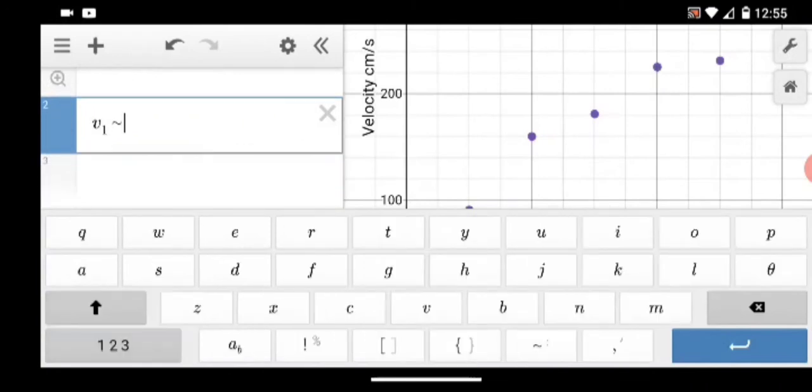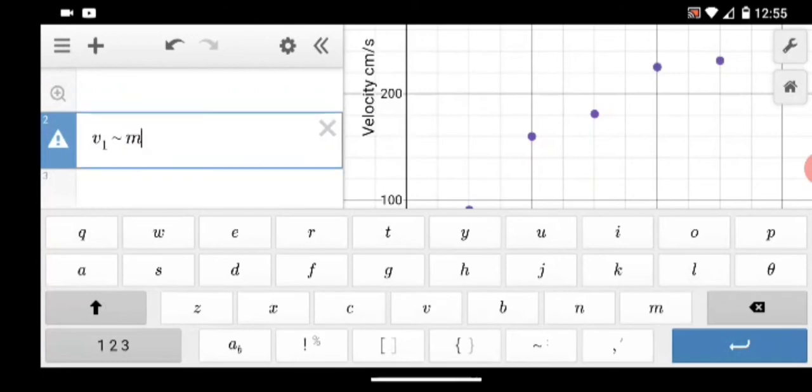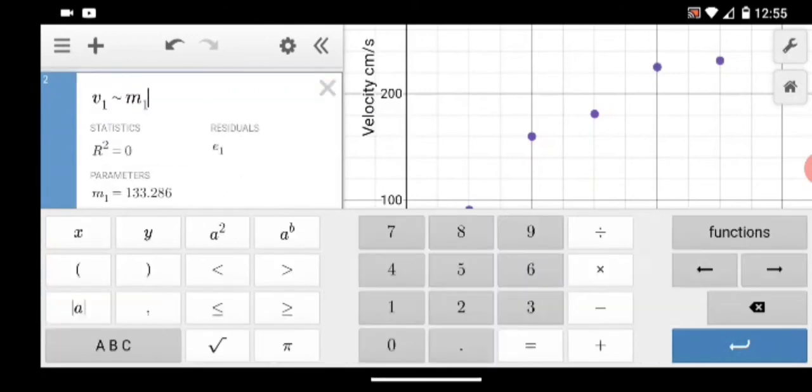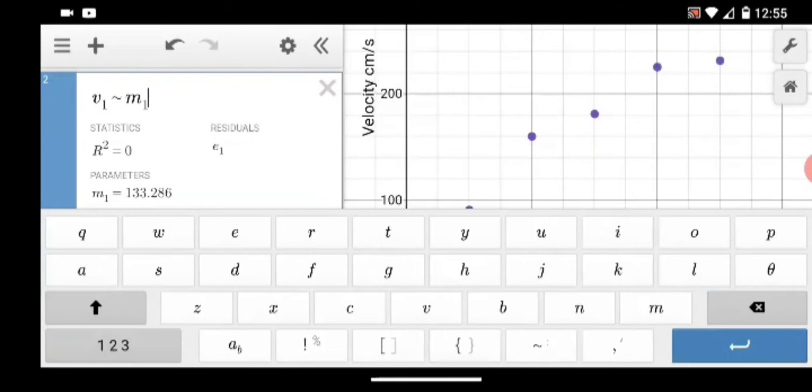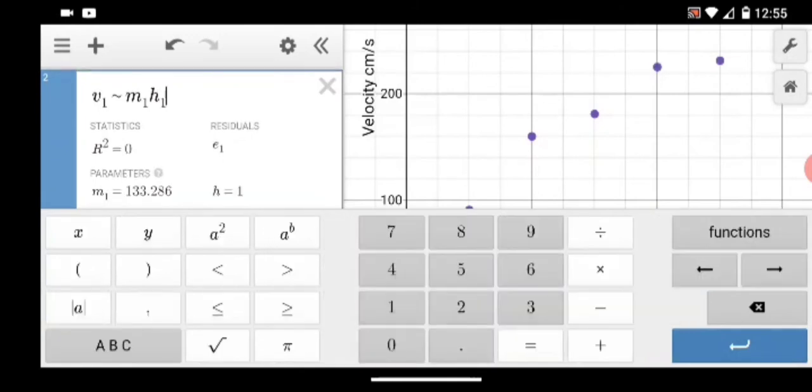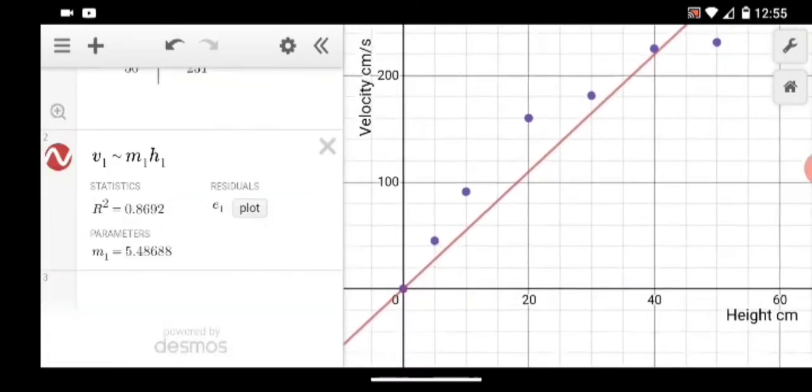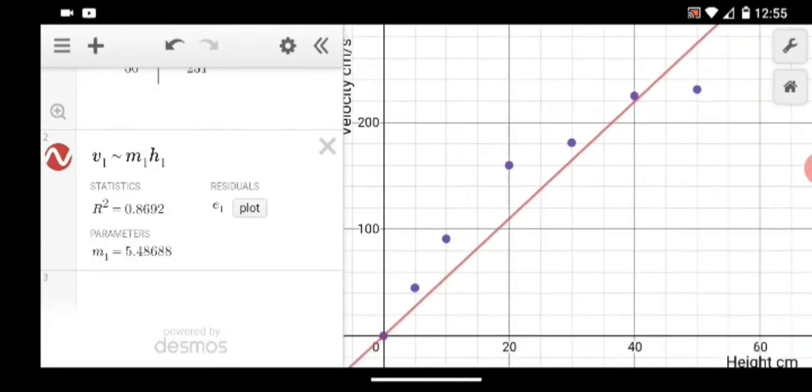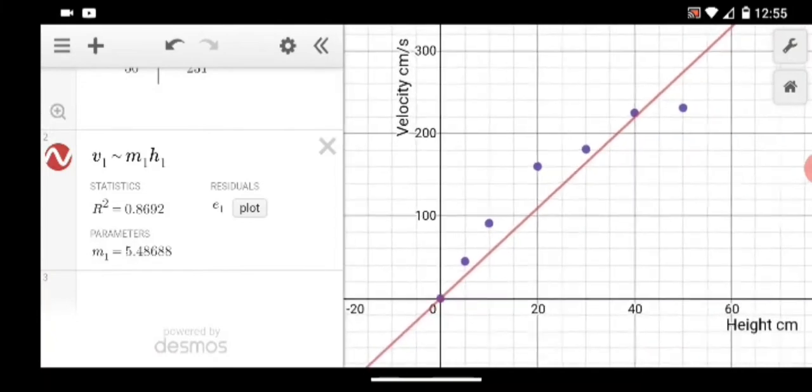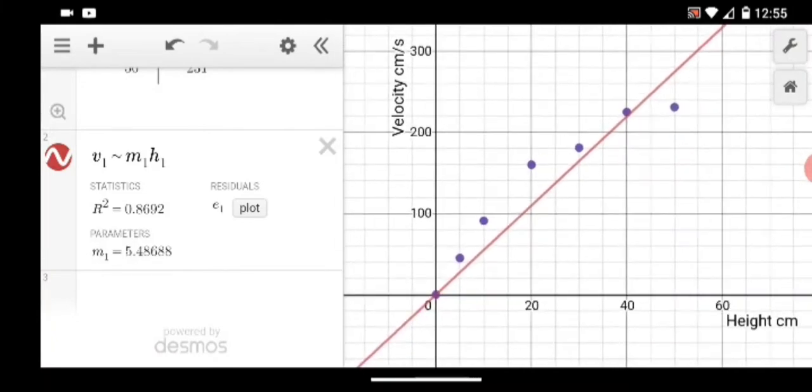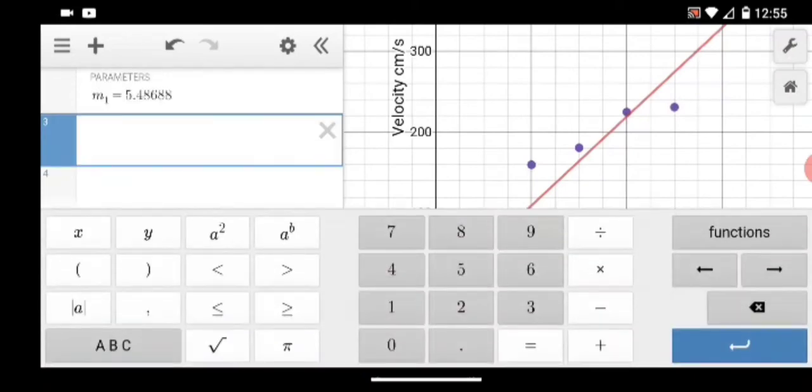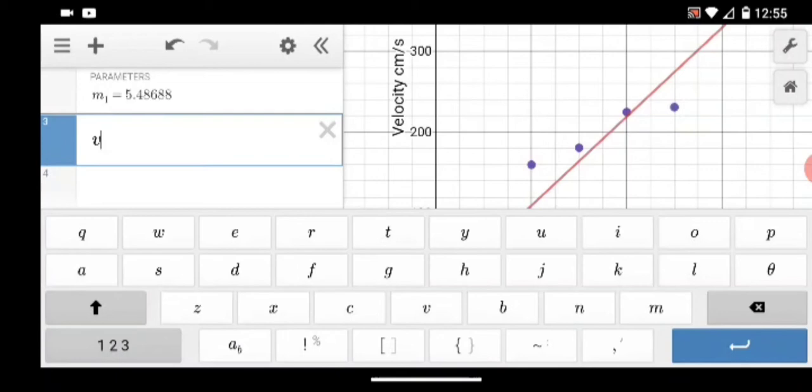And here we can see that if I put in a linear model, suppose I decide v1 is equal to m1 h1. This would be a y equals mx linear model. I will find that that linear model does not fit well. The points arc above it, cross the line, and then are below the line. That's the sign of curved data. That's a sign of nonlinear data when it starts on one side and goes to the other.